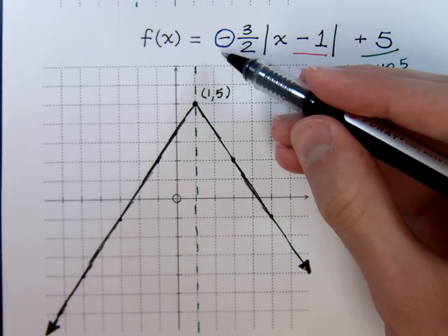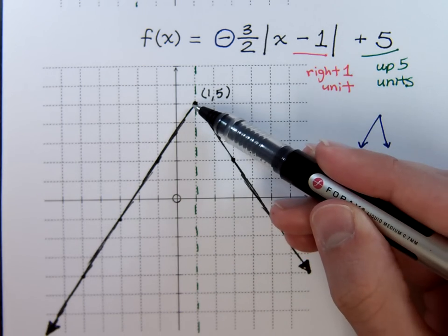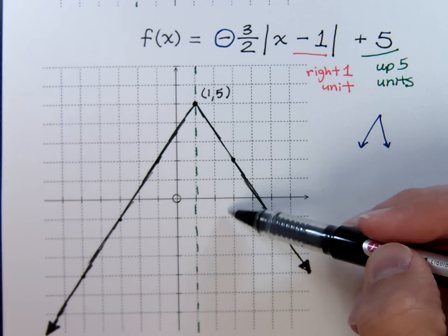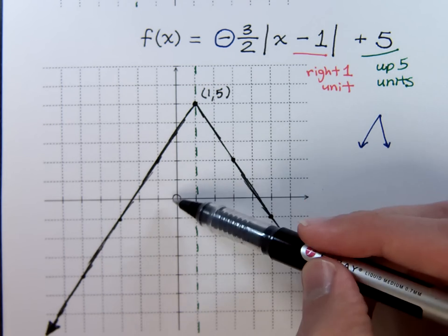So, the negative tells us we're opening upside down. The three halves gives me that slope, that rise over run of three over two. I have moved to the right one unit and up five for my vertex.